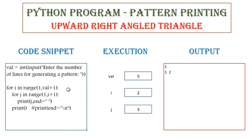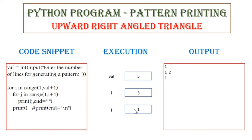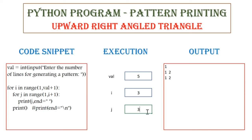Next, the value of i will now be 3. For j in range of 1 to 3 plus 1, which is 4, so it will be from 1 to 4. The value of j will be 1, and I am going to print the value of j, which is 1, in the next line followed by a space. The inner loop continues where the value of j will now be 2, followed by a space. And the inner loop continues, so the value of j will now be 3 and I am going to print 3. In the next iteration, the condition fails and it exits from the inner loop and prints a new line.